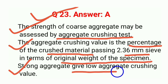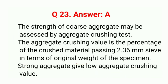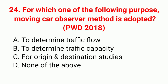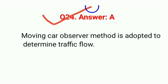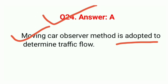Strong aggregate gives a low aggregate crushing value. Answer is A. Question 24: For which purpose is the moving car observer method adopted? Correct answer A: to determine traffic flow. The moving car observer method is adopted to determine traffic flow.